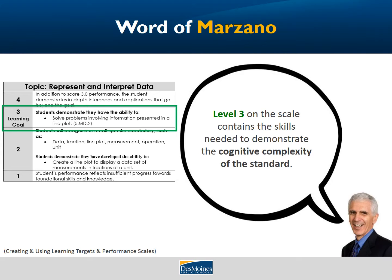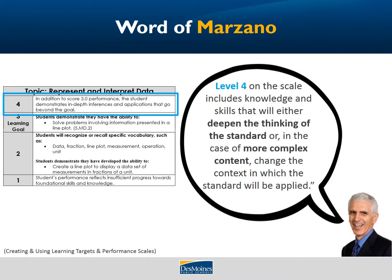Level 3 on the scale contains the skills needed to demonstrate the cognitive complexity of the standard. Level 4 includes knowledge and skills that will either deepen the thinking of the standard or, in the case of more complex content, change the context in which the standard will be applied. So it really is not going to the next grade level skills, but truly deepening the current grade level based on the complexity of the standard.